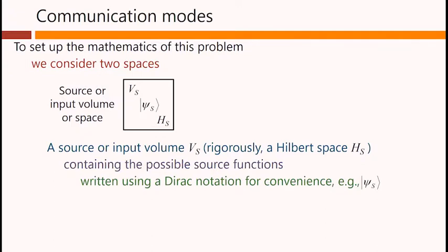And this space can contain the possible source functions. And we'll write these using a Dirac notation for convenience, as I've shown here for this function, PsiS, so representing some source.